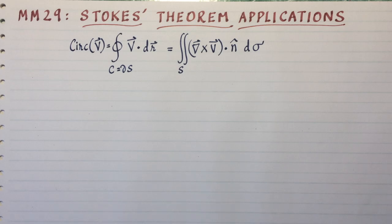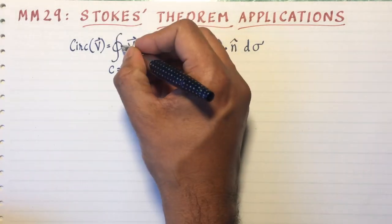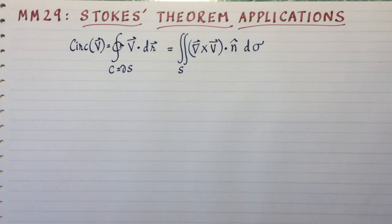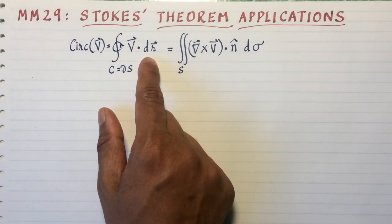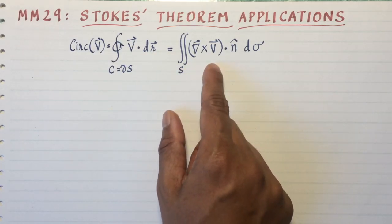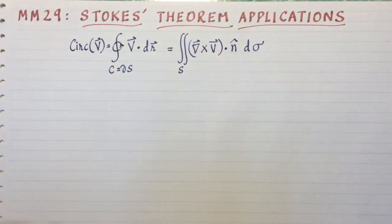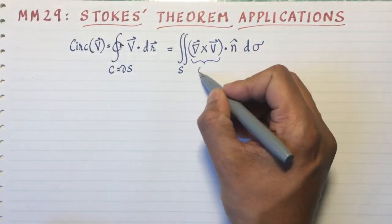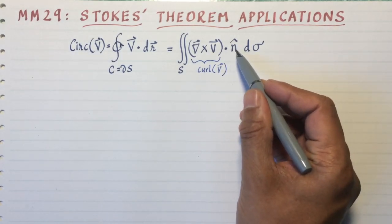I would like to talk about Stokes' Theorem, especially its applications to the physical sciences. Stokes' Theorem relates the circulation of a vector field defined on the left side as the line integral, an oriented line integral of the vector field dotted with the arc length vector dr. And on the right side it relates it to a surface integral of the curl of the vector field.